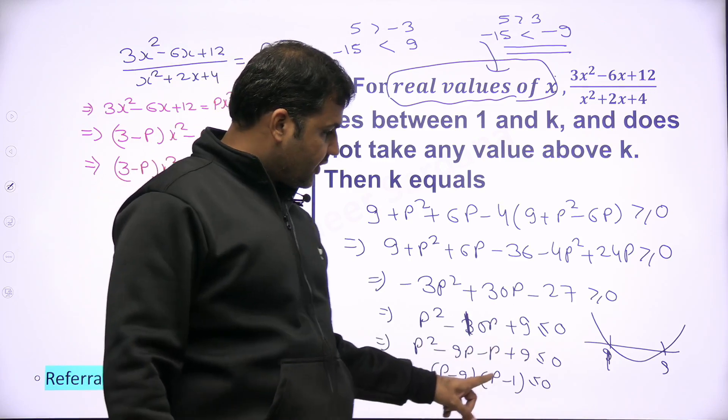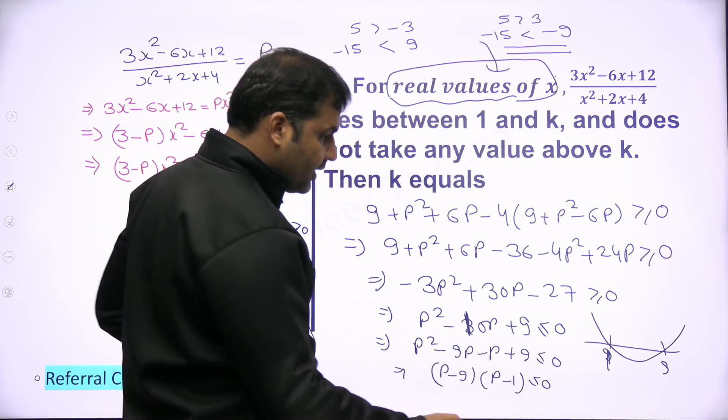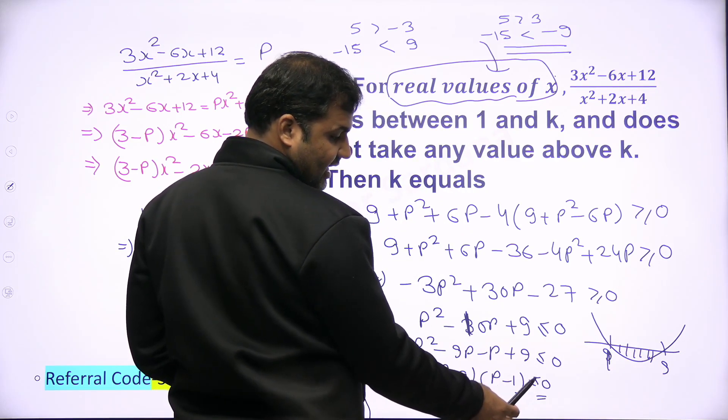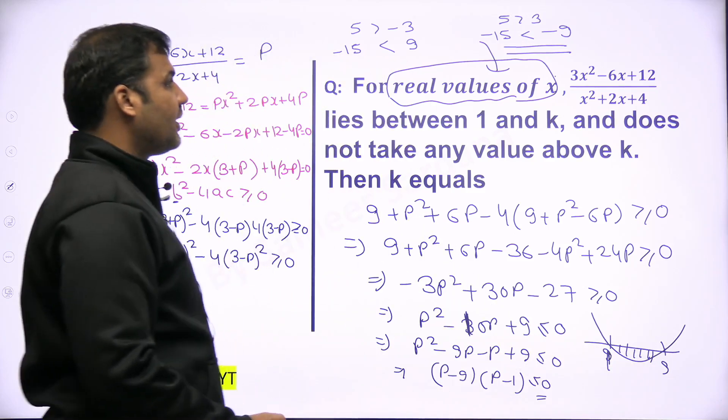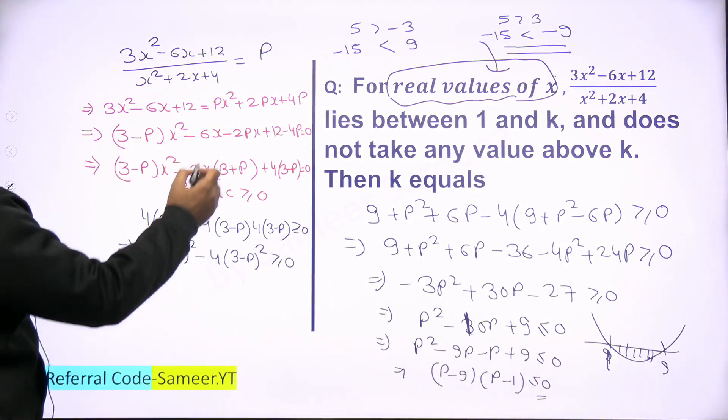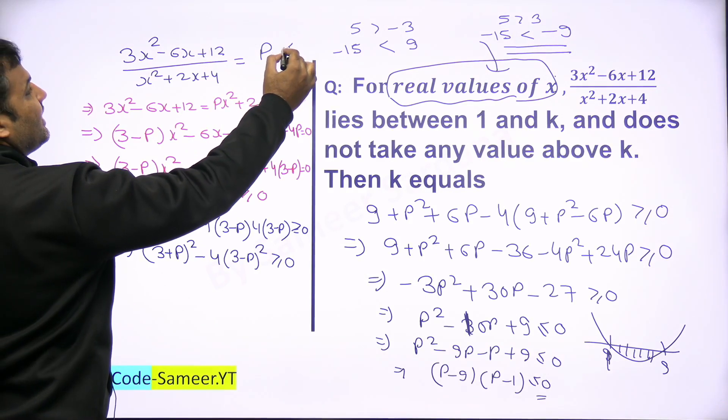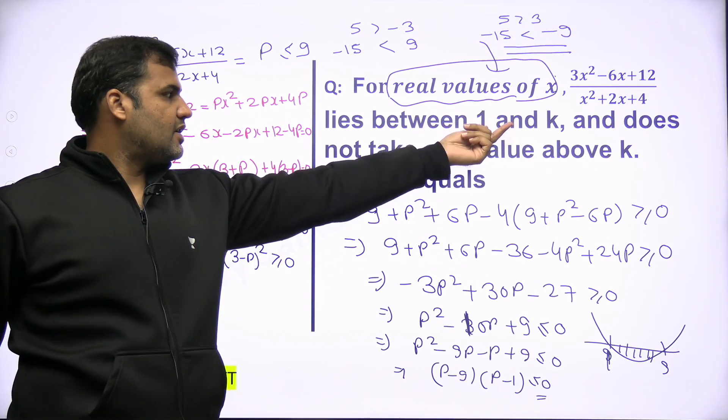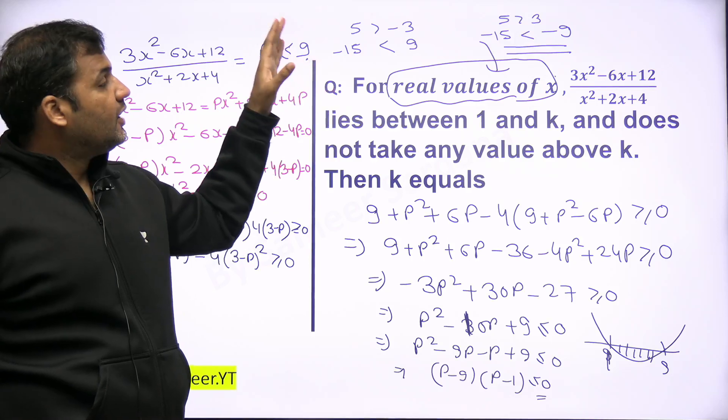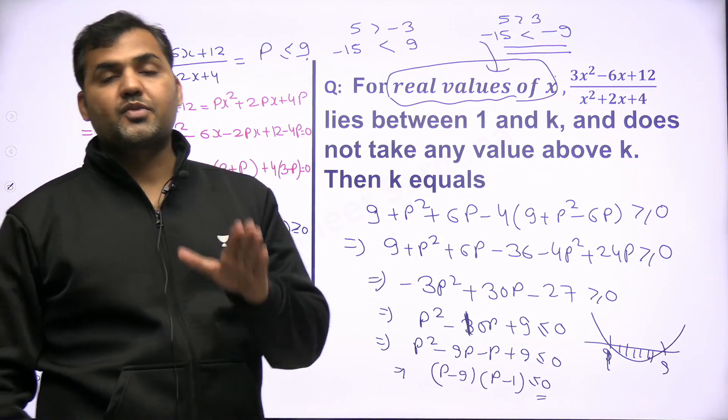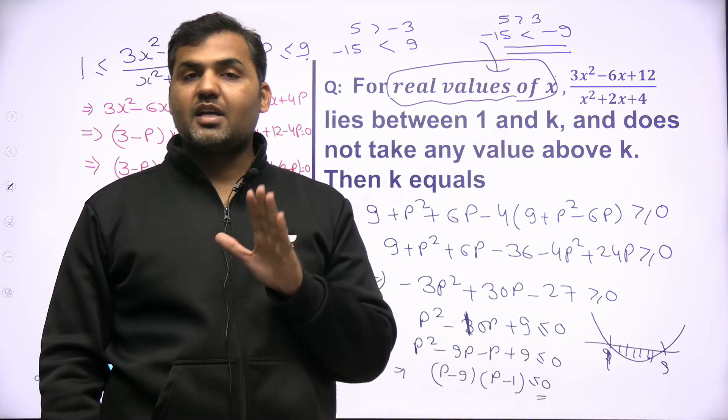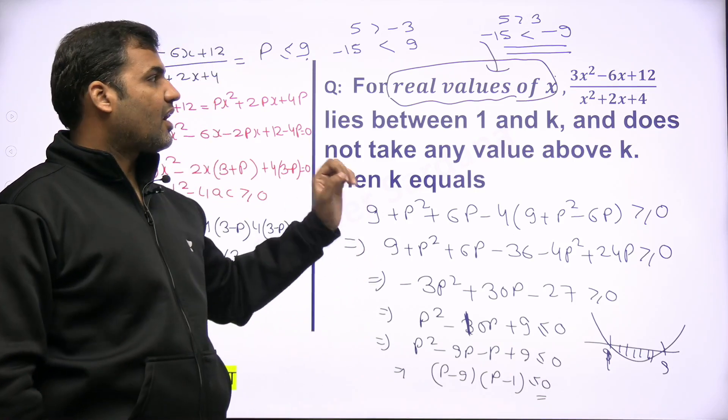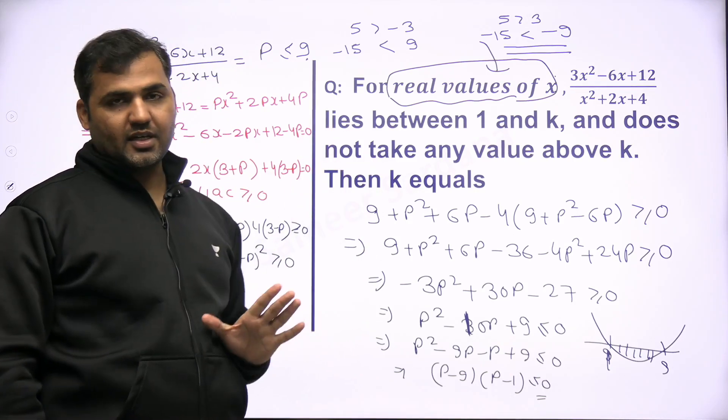So this lies between 1 and 9. That means the value of p here, this expression which we assumed to be equivalent to p, this p is less than or equal to 9 and greater than or equal to 1. Since the maximum value is equivalent to k, k will be equal to 9. So this is how you are supposed to find the maximum and minima of such type of expression. This has appeared in CAT in previous year papers. You should know the right approach to solving this question. This will always give you the correct answer.